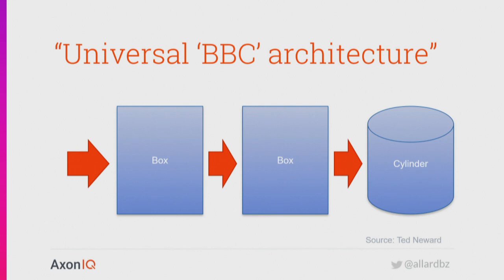I like this way of representing the architecture because it shows the absurdity of what we've been doing. We need some persistent something, so we drop that in a cylinder. But you don't want to put too much logic in there, so you put a box in front of it. There's too much logic in that box, so you put another box in front of it. You separate out the UI or API logic, and in the middle box you put some domain or application logic. If two boxes aren't enough, you create a third and fourth box until all the problems are diluted so far that you hardly notice. And then you run for another project.